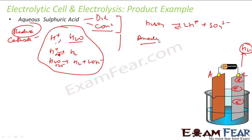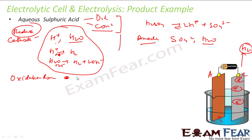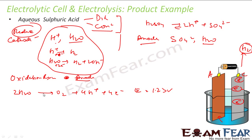Now let's talk about anode. At anode, the candidates for oxidation are either SO₄²⁻ ions or water. For water oxidation: H₂O becomes O₂ plus H⁺ plus electrons, and E = 1.23 V. For SO₄²⁻: it becomes S₂O₈²⁻ and gives two electrons, and E = 1.96 V.